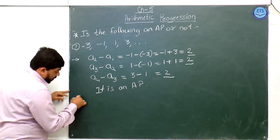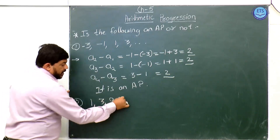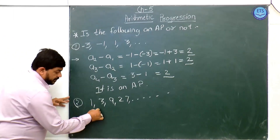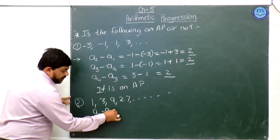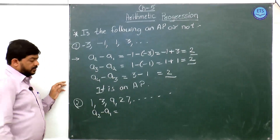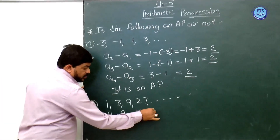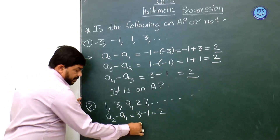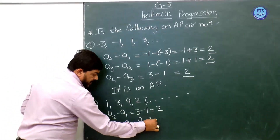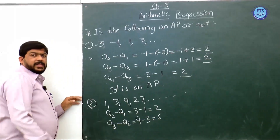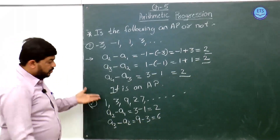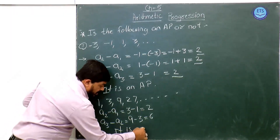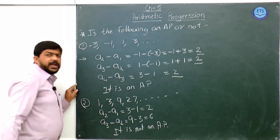Let us take one more example: 1, 3, 9, 27 and so on. Here a₂ minus a₁ = 3 minus 1 = 2. The third term a₃ minus second term = 9 minus 3 = 6. You can see that the common difference is different. So there is no need to calculate any further — this is not an AP, it is not an Arithmetic Progression.